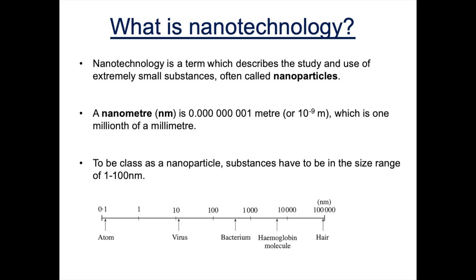So let's look at what we mean by nanotechnology. Nanotechnology is a term which describes the study and use of extremely small substances, often called nanoparticles. A nanometer is one times ten to the minus nine meters, which means it's 0.000000001 meters, which is one millionth of a millimeter.